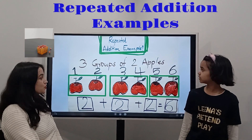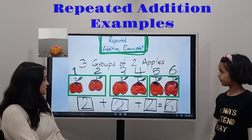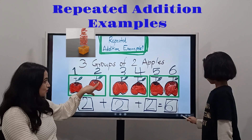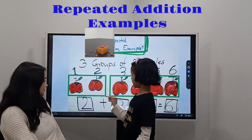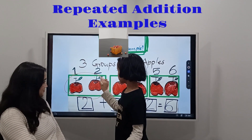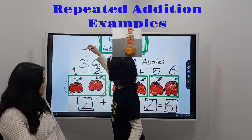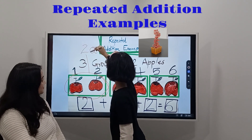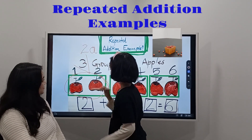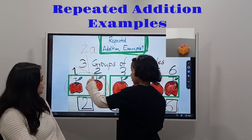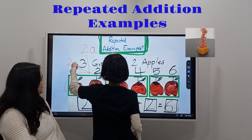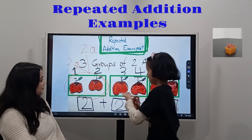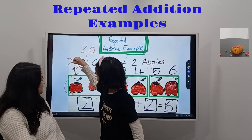Example: three groups of two apples. Here — two apples in each box. Look, these two are two big apples, and also these two are two big apples, and they have three groups in all.